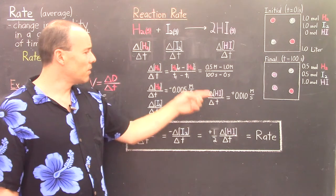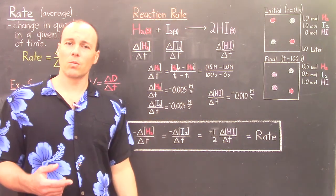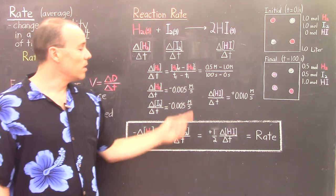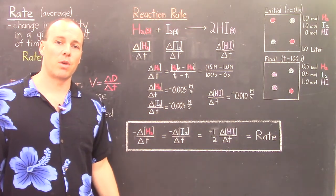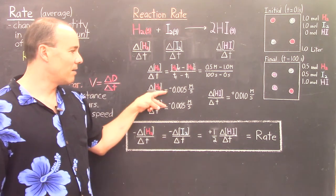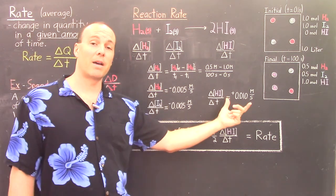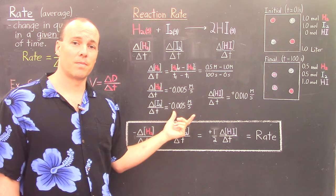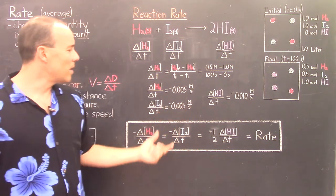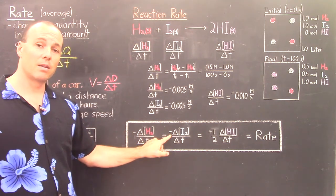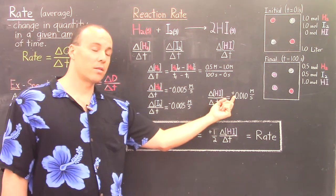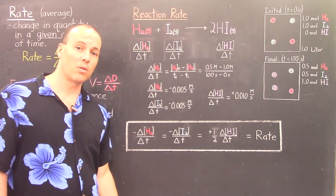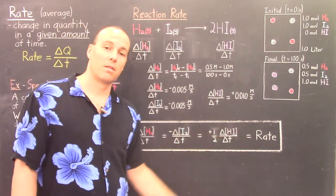There are three different rates here, and we don't want three different rates to describe one reaction. So we need to realize the relationship between these three rates. The reactant rates have a negative sign and the product rate has a positive sign, and the product number is twice as big as the reactant numbers. If we multiply the reactant rates by negative 1 and the product rate by one-half, then the rates become equal. We can call that the rate of the chemical reaction.